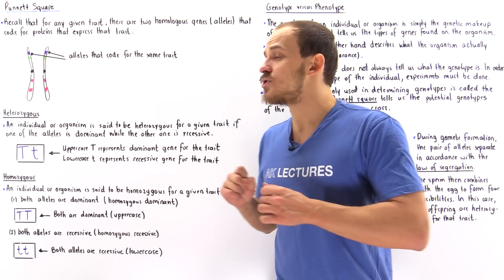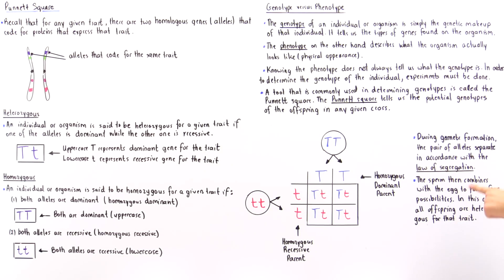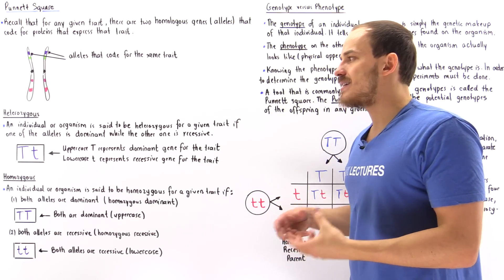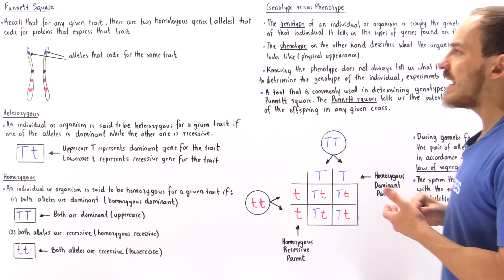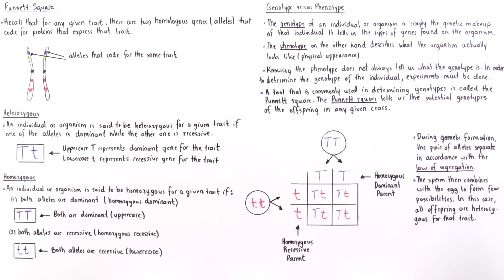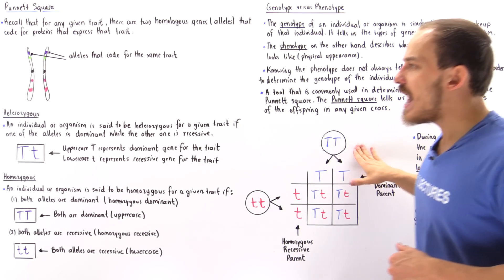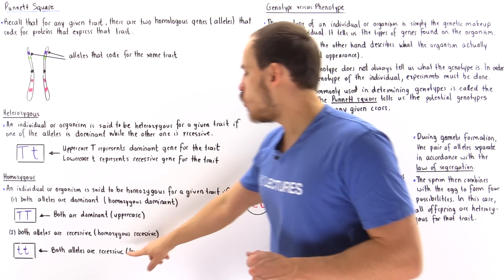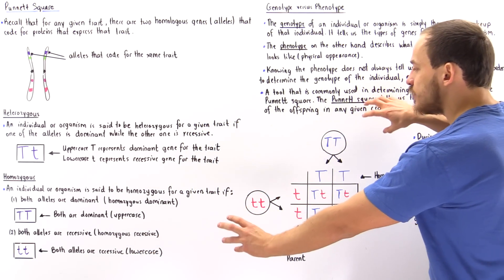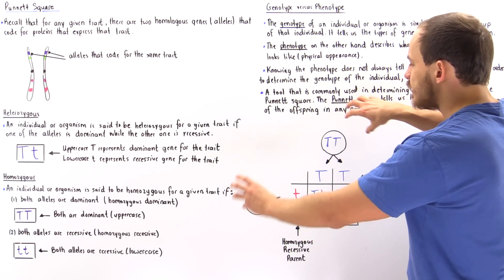What exactly does a Punnett square tell us? The Punnett square tells us the potential genotypes of offspring in any given mating or crossing process. To see what a Punnett square looks like, let's take the following cross: one parent is homozygous dominant and the other parent is homozygous recessive. We are mating these two organisms in the following way.